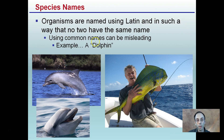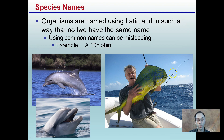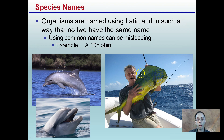Species names are important — organisms are named using Latin so that no two have the same name. Common names can be very misleading. For example, both a marine mammal and a fish are called 'dolphin.' The mammal is what most people think of, but the fish — also known as mahi-mahi — is also called a dolphin. On a restaurant menu, dolphin almost always refers to the mahi-mahi, not the mammal. That's why we use scientific names.